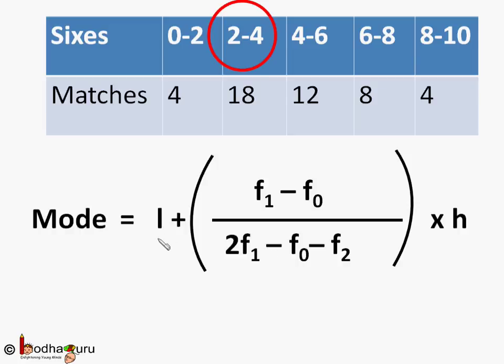Here, L is the lower limit of the modal class, which is 2 in this example. Modal class is 2-4, so lower limit is 2.